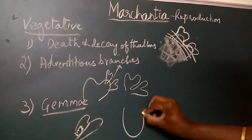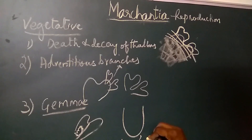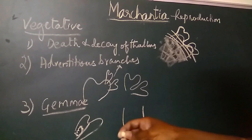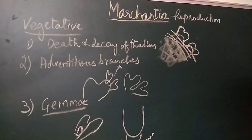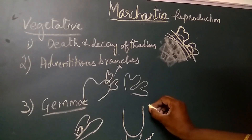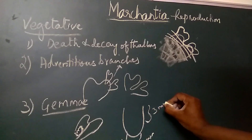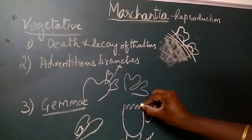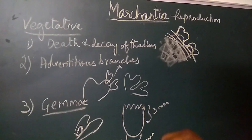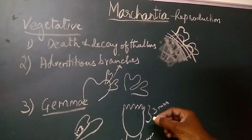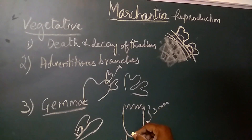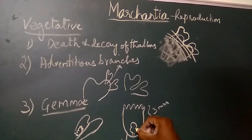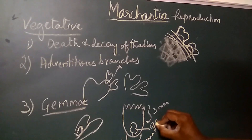Each Gemma cup is approximately 2 millimeters in diameter. It is embedded inside the tissue of the thallus, about 2 millimeters in diameter and about 3 millimeters in height. The margins of the Gemma cup are lobed or fringed, and the Gemma cup is green in color. From the floor of the Gemma cup, small stalked globose or discoid bodies arise, and these discoid bodies are called Gemmae.